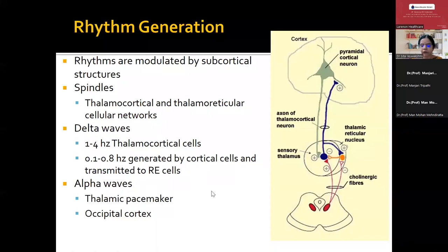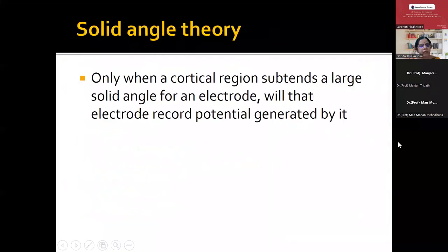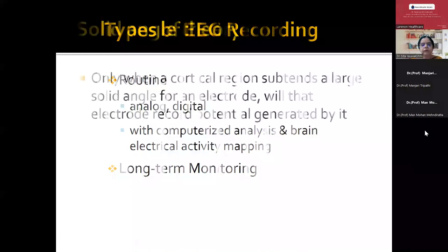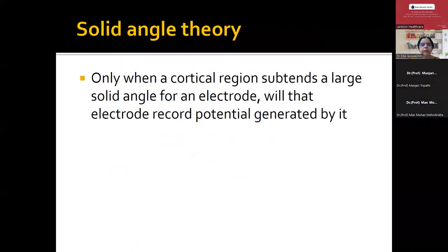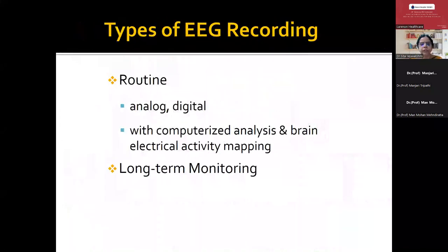The most important generator of alpha waves is now known to be the occipital cortex — that is why you record alpha waves in the posterior cortex. The solid angle theory says that only when a cortical region subtends a large solid angle for an electrode does that electrode record the potential generated by it. The electrode should be subtended at a particular angle for the electrical activity to be detected.